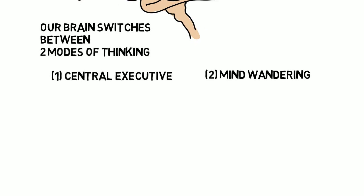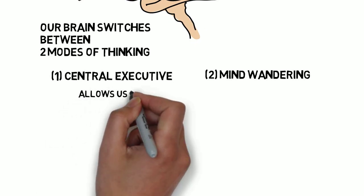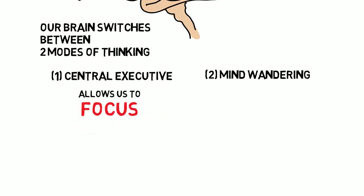The central executive system is what allows us to focus on the task at hand. It is active when we are paying attention. And when this is happening, our mind-wandering system is off.